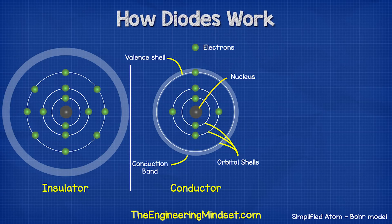With an insulator, the outermost shell is packed. There's very little to no room for an electron to join. The nucleus has a tight grip on the electrons and the conduction band is far away, so the electrons can't reach this to escape. Therefore, electricity cannot flow through this material.